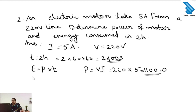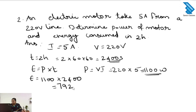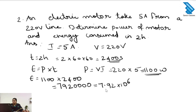Next we have to find the energy. Substituting the values: 1100 watt multiplied by 7200 seconds. We get the answer as 7.92 into 10 raised to 6. The unit of energy is Joule.